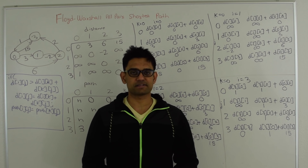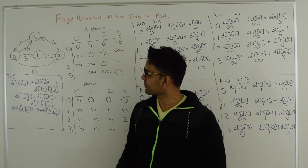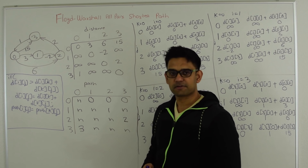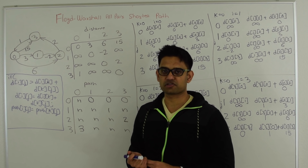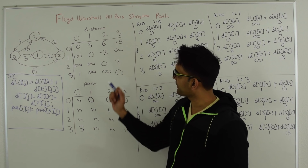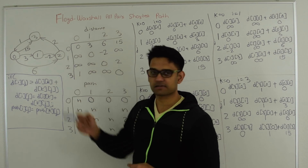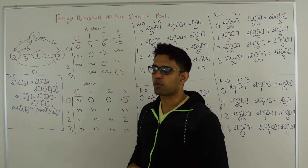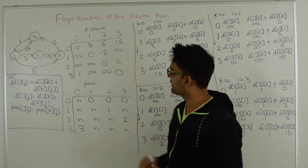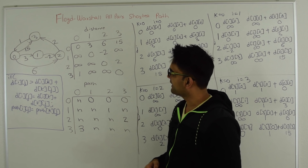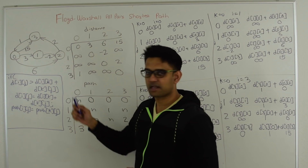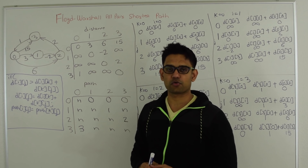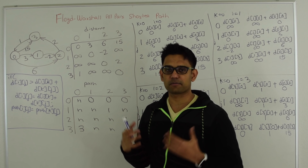Next let's see how this algorithm works. We are going to apply Floyd-Warshall on this directed graph. First, we take two two-dimensional matrices whose size is the same as the total number of vertices. Here we have four vertices, so the size will be 4x4. We go through all the edges and put their values in the distance matrix. The distance matrix stores the minimum distance found so far between two vertices.